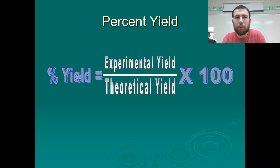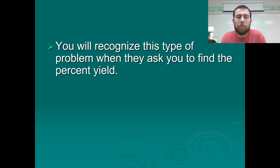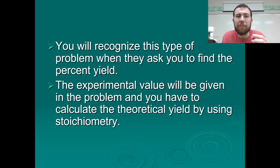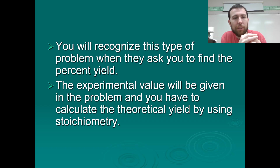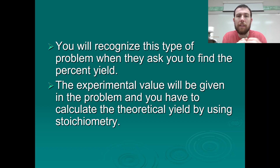To calculate percent yield: percent yield equals experimental yield divided by theoretical yield, multiplied by 100. In a percent yield problem, the experimental value will be given to you — they'll say a certain amount of product was obtained in an experiment. Then they'll ask you to calculate the theoretical yield using stoichiometry, which may involve doing a limiting reactant problem first. Or they might tell you which reactant was limiting and which was in excess.